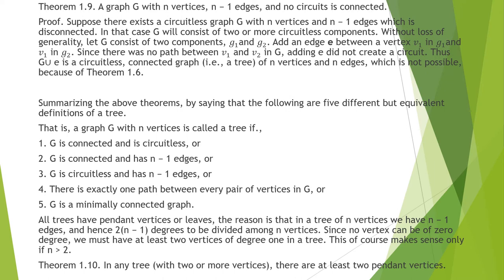This gives us a contradiction. Our assumption that there is a circuitless graph with n vertices and n minus 1 edges that is disconnected is false. Therefore, a graph with n vertices, n minus 1 edges, and no circuits will be connected.